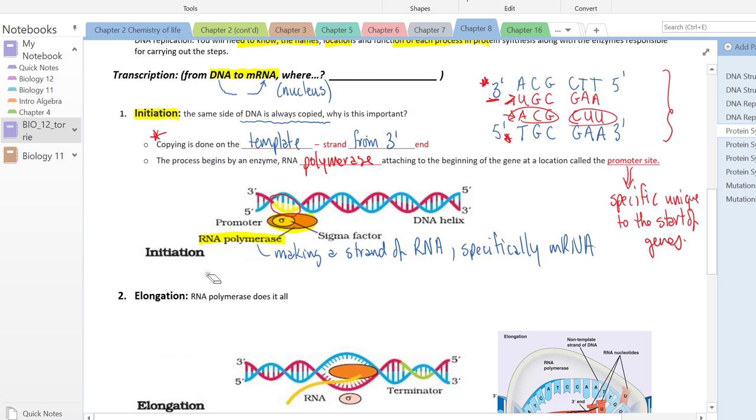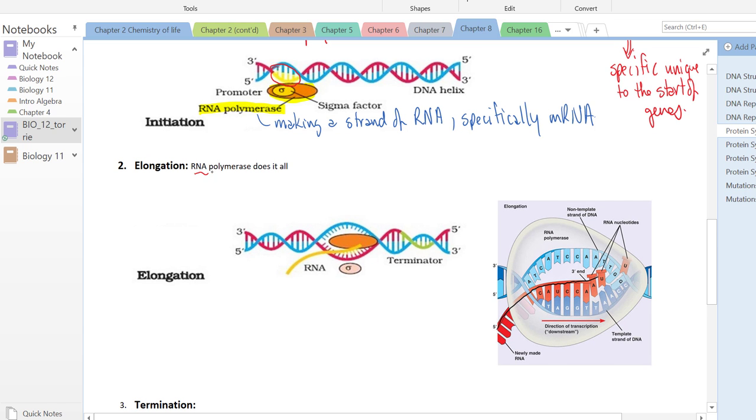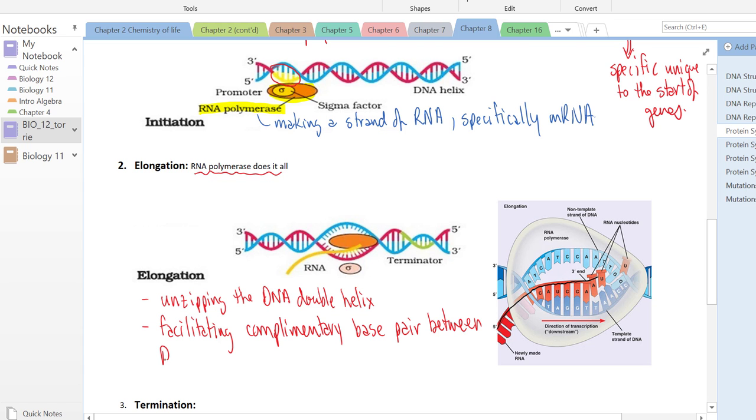The second step is elongation. Like I said, RNA polymerase does it all, so elongation involves unzipping the DNA double helix and then facilitating complementary base pairing between RNA nucleotides and the DNA nucleotides.